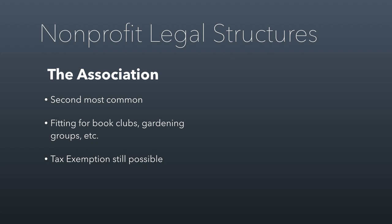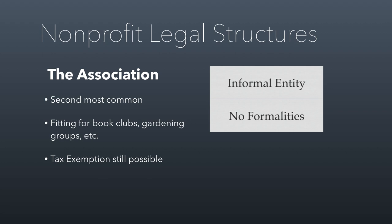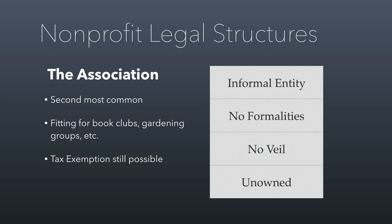The association is the second most common nonprofit entity form, though not very common in Utah — more common in states like California. These are lightweight, informal organizations suited for things like book clubs or gardening groups, and provide a way to get a bank account in your organization's name. They can get tax exemption because they are not owned under the law. They have almost no formalities, but there is no corporate veil, so all participants' personal assets are at risk.